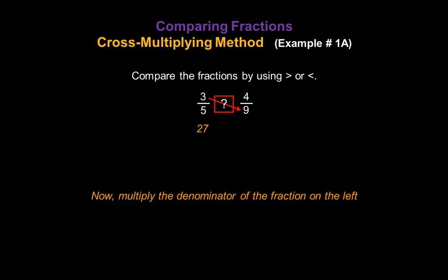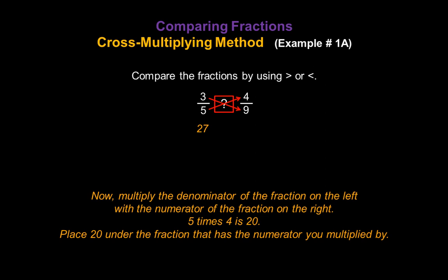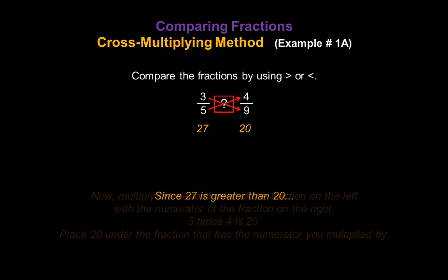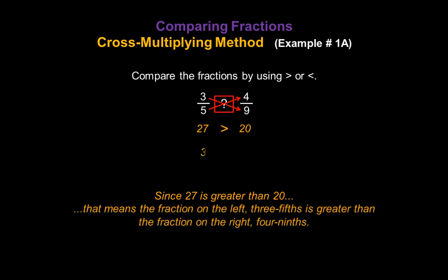Now multiply the denominator of the fraction on the left, that's a 5, with the numerator of the fraction on the right, that's a 4. 5 times 4 is 20. The 20 is associated with the other fraction — the one whose numerator you just multiplied by — so 20 is associated with 4 ninths. Now we can compare those two products. Since 27 is greater than 20, that tells us that the fraction on the left, 3 fifths, is greater than the fraction on the right, 4 ninths. And that's all there is to the cross multiplying method.